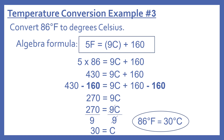In algebra, what we do to one side we have to do to the other — we're trying to get C by itself. So first we subtract 160 from each side: 430 minus 160 equals 270, leaving us with 270 equals 9C.